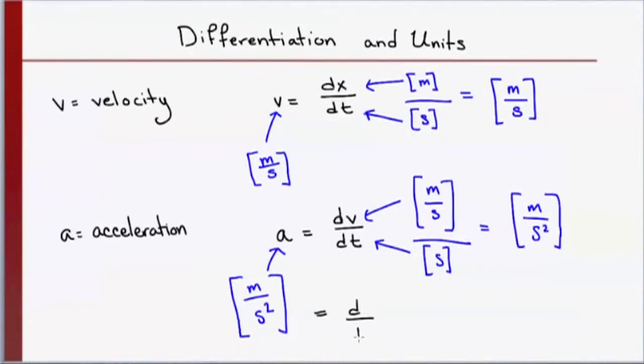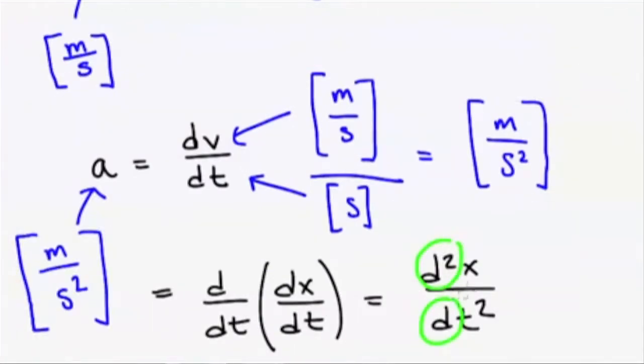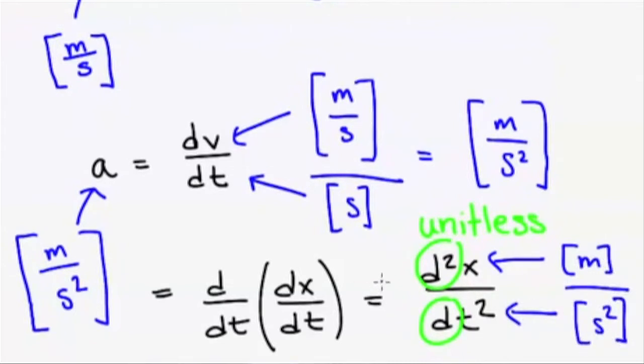But when you go ahead and substitute in the fact that velocity is dx/dt, we can put it together like this. And let's make sure that this still makes sense. Recall that the differential, d, is unitless. So, anything unitless squared is still unitless. So, the numerator here is meters. And the denominator is d, which is unitless, and t squared, time squared, that's seconds squared. So, indeed, this expression has the correct units of meters per second squared.